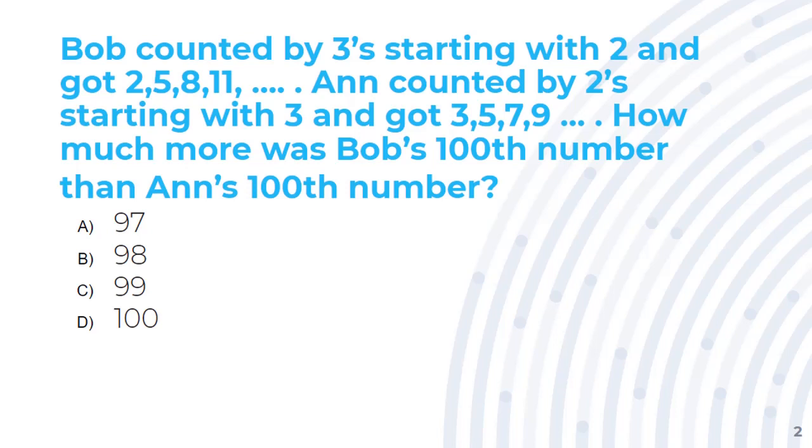And if Bob's hundredth number would be some number, and her number would be 2 less than the hundredth number, so it would be 98B.